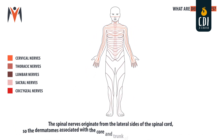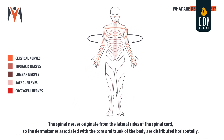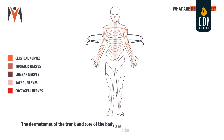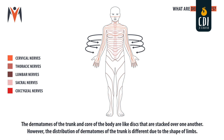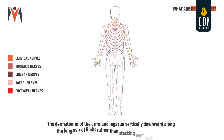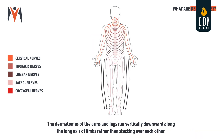The spinal nerves originate from the lateral sides of the spinal cord, so the dermatomes associated with the core and trunk of the body are distributed horizontally. The dermatomes of the trunk and core of the body are like discs that are stacked one over another. However, the distribution of dermatomes of the trunk is different due to the shape of limbs. The dermatomes of the arms and legs run vertically downward along the long axis of limbs rather than stacking over each other.